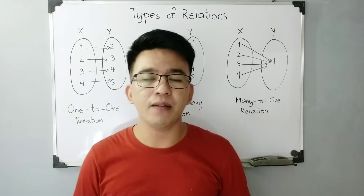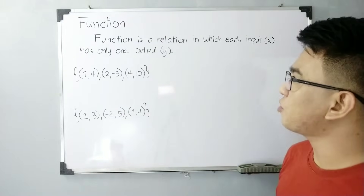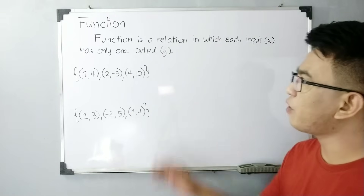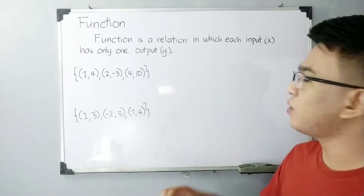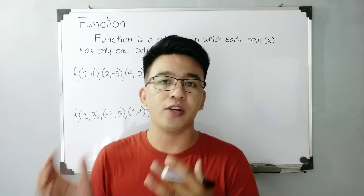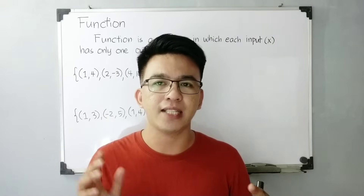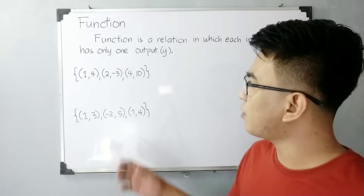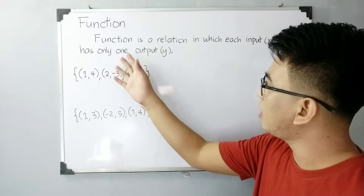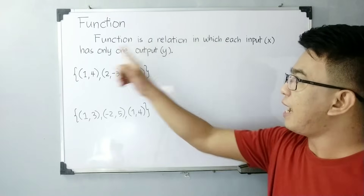In the next part of our video, I'll give you the definition and examples of a function. Function is a relation in which each input x has only one output y. Before we elaborate this definition, I want you to know: function is a relation. All functions are relations, but not all relations are functions. Relations have a wider scope compared to functions because a function is just under relation.